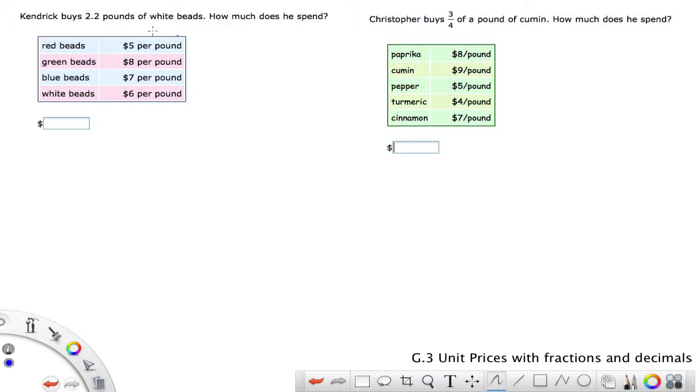Let's look at this first one on the left. We have 2.2 pounds of white beads, so we want the white beads. We find the white beads here and it's $6 per pound.